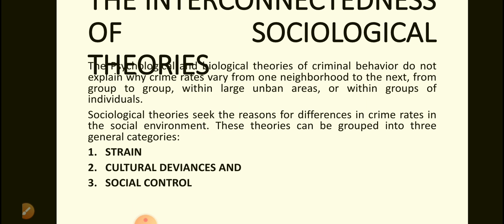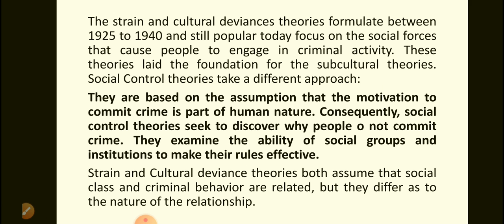1. Strain. 2. Cultural Deviance. 3. Social Control. The strain and cultural deviance theories, formulated between 1925 and 1940 and still popular today, focus on the social forces that cause people to engage in criminal activity. These theories laid the foundation for the subcultural theories. Social control theories take a different approach. They are based on the assumption that the motivation to commit crime is part of human nature. Consequently, social control theories seek to discover why people do not commit crime.